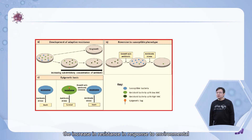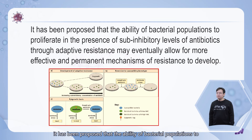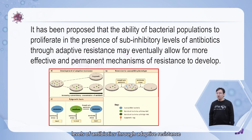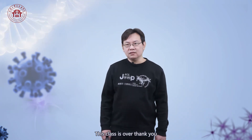Moreover, the increase in resistance in response to environmental stimulants may not completely reverse upon removal of the stimulants, leading to a gradual decrease in MIC over time. Finally, it has been proposed that the ability of the bacterial population to proliferate in the presence of a sub-inhibitory level of antibiotics through adaptive resistance may eventually allow for more effective and permanent mechanisms of resistance to develop. This class is over.